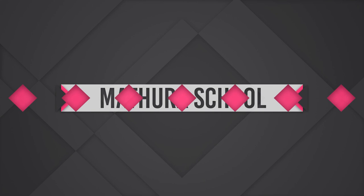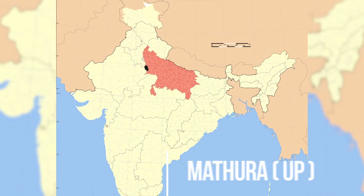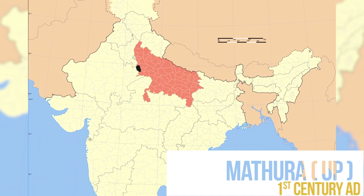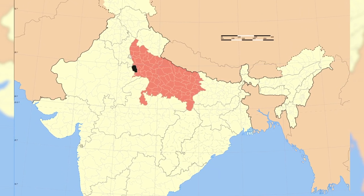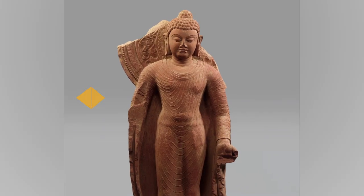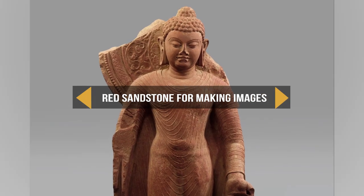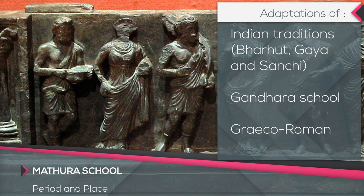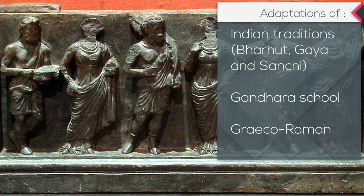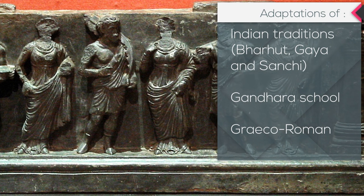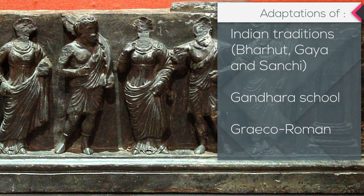The school of art that developed at Mathura, in current Uttar Pradesh, has been called the Mathura school. Its origin has been traced back to the 1st century AD, when its genuine progress began. The artists of Mathura used spotted red sandstone for making images. The Mathura school owed much to earlier Indian traditions like Bharhat, Gaya and Sanchi. It also borrowed from the Gandhara school and adopted more than one Greco-Roman motif.